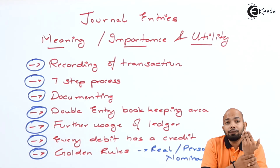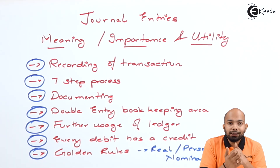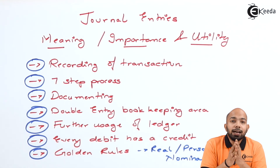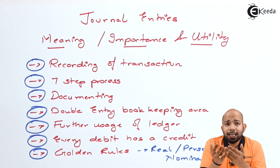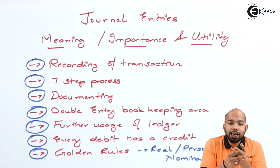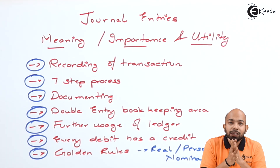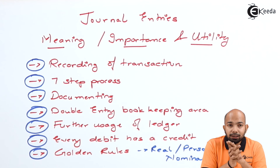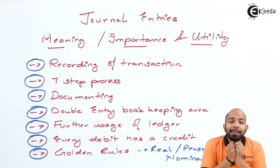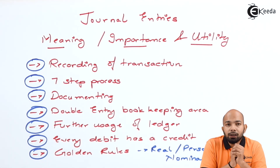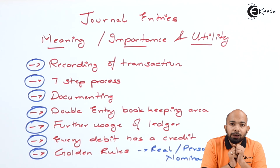The next one is personal account: debit the receiver, credit the giver. Any transaction which has personal accounts — like Mr. A or Mr. B, any person related to a transaction — will be debited or credited as per the nature of the transaction. The last one is nominal account. If your transactions have expenses, incomes, losses, or gains, all these will be classified under nominal account: debit all expenses and losses, credit all incomes and gains. This is the rule followed for nominal accounts.